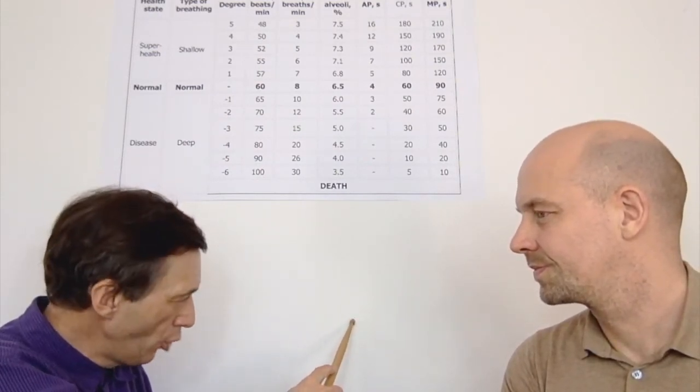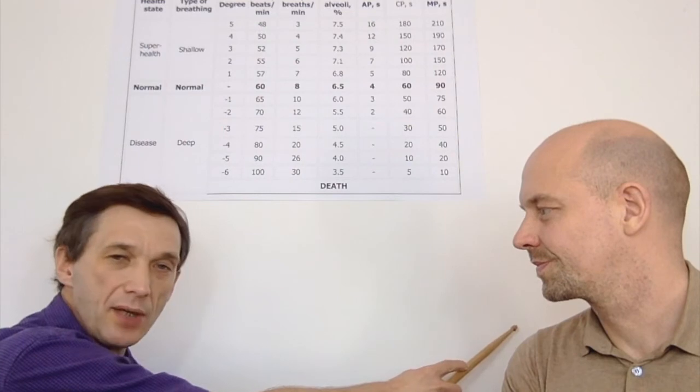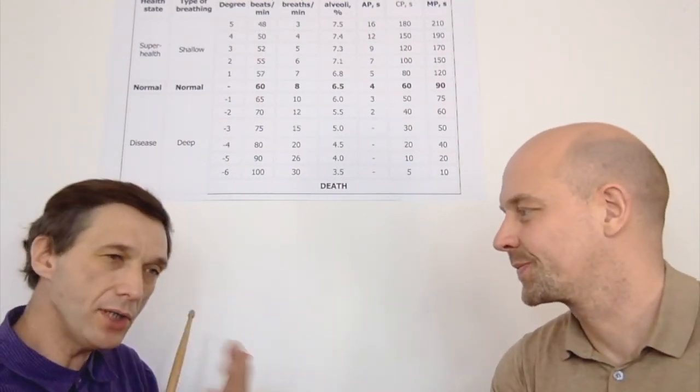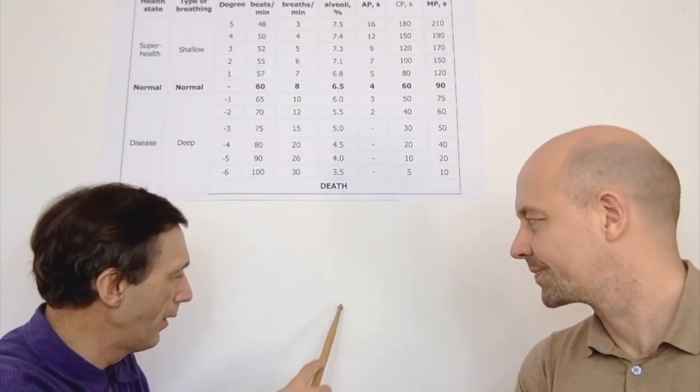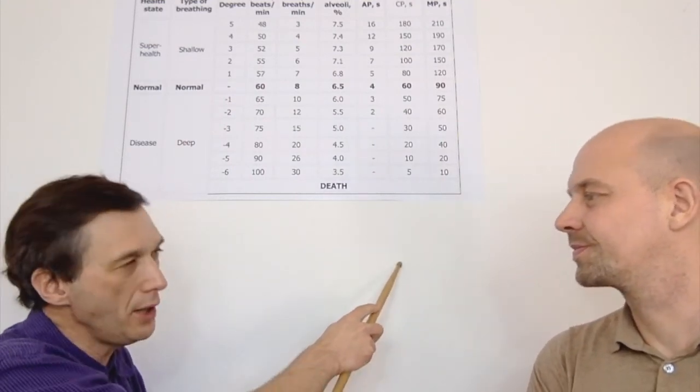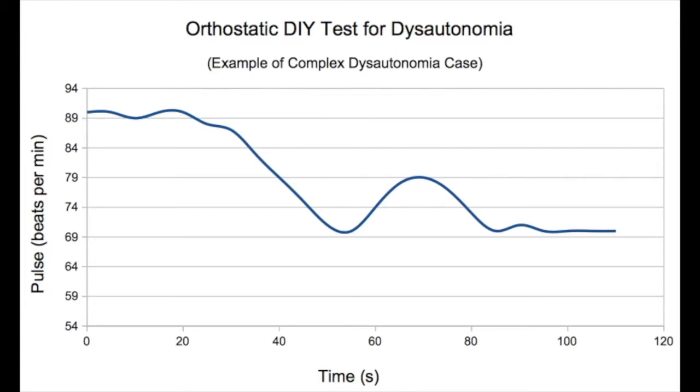Now, normally it should stay at 70. But in this complex case of dysautonomia, heart rate goes to 70, then it increases up to 80. Gradually increases, takes maybe 5, 10 seconds, then it goes down back again, and then it stabilizes at 70 after 2, 3 minutes.